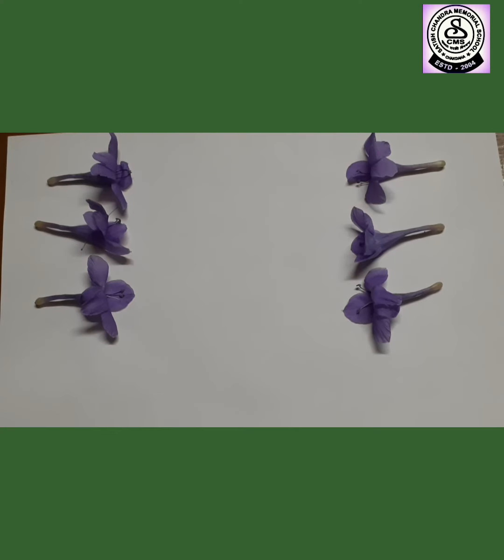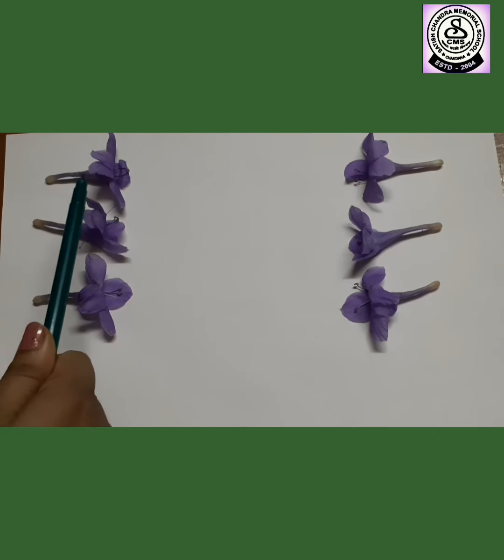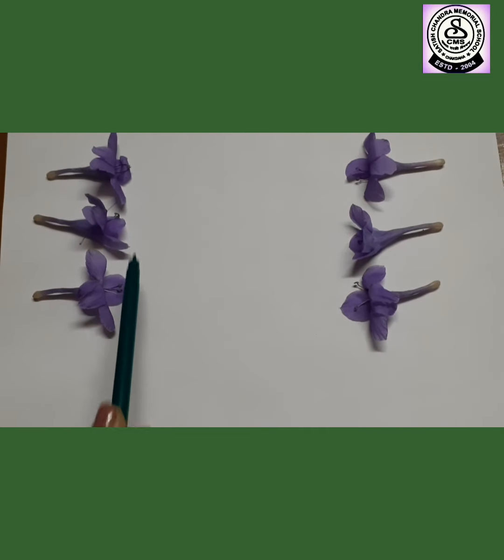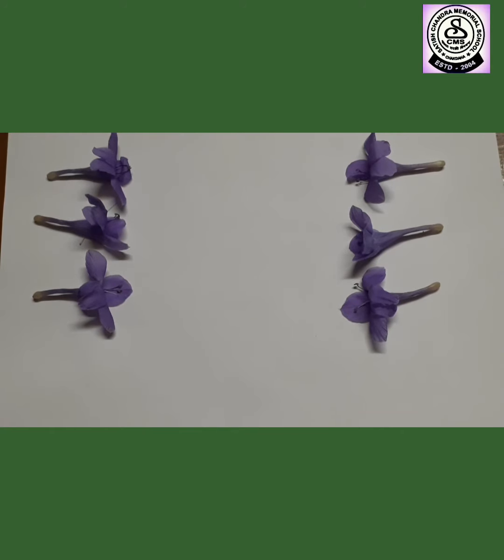Children, here we can see some flowers. Can you tell me what is the color of these flowers? Yes, it is purple. Now tell me how many flowers I have in the left side? We have 1, 2, 3. So we have got 3 flowers here. Let's write here 3.